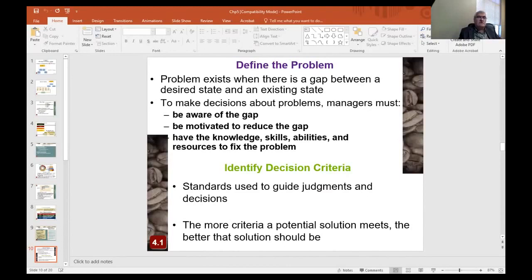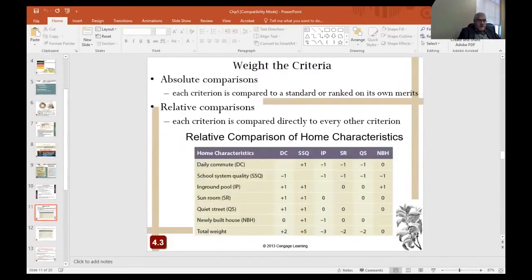In identifying decision criteria, you have to have standards used to guide judgments and decisions. The more criteria a potential solution meets, the better that solution should be. After identifying decision criteria, the next step is deciding which criteria are more or less important. The chapter discusses two methods, which are absolute and relative comparison.